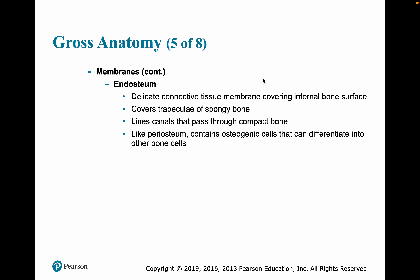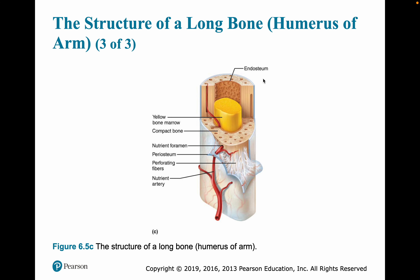The endosteum is a delicate connective tissue membrane covering the internal bone surface. It covers the trabeculi of spongy bone and lines canals that go through compact bone. Like the periosteum, it contains osteogenic cells that can differentiate into other bone cells.